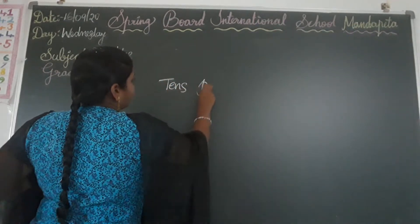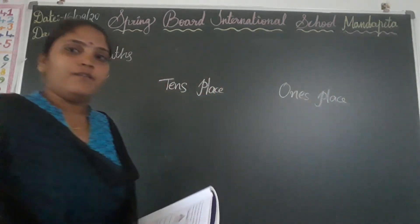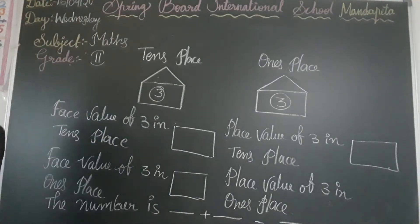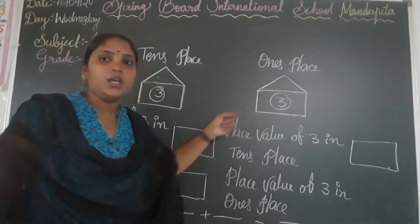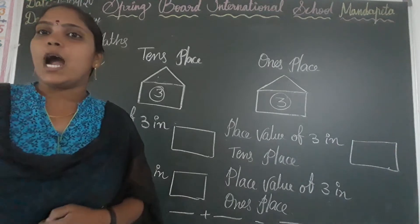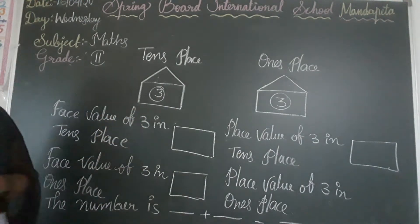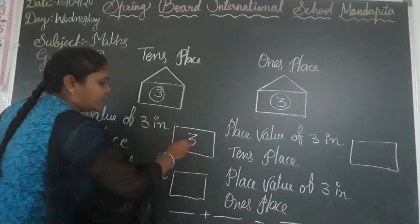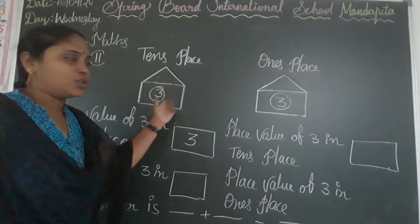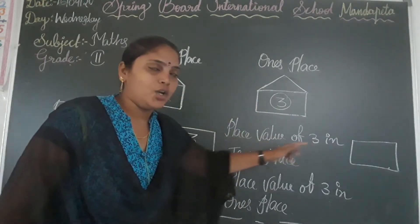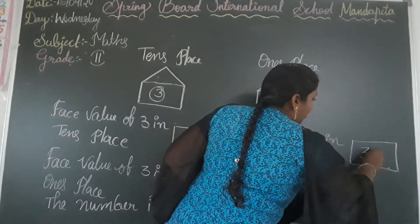Next question: 10's place and 1's place. In the 10's place, 3 is given, and in the 1's place also 3. We have to write face value and place value of the given digit. Face value never changes, so the face value of 3 is 3. The place value of 3 in the 10's place is 30.